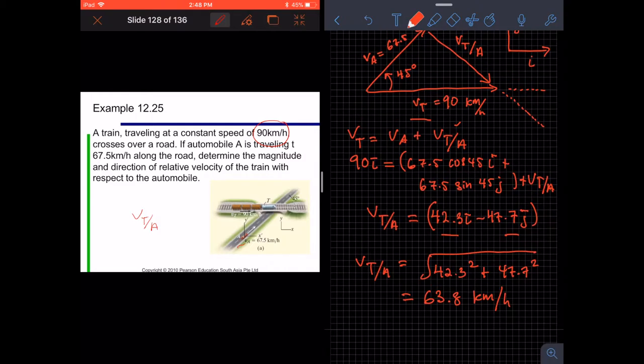Using the diagram that we have, the X component here is 42.3, and then the Y component here is equal to 47.7. And then we need to find the direction.